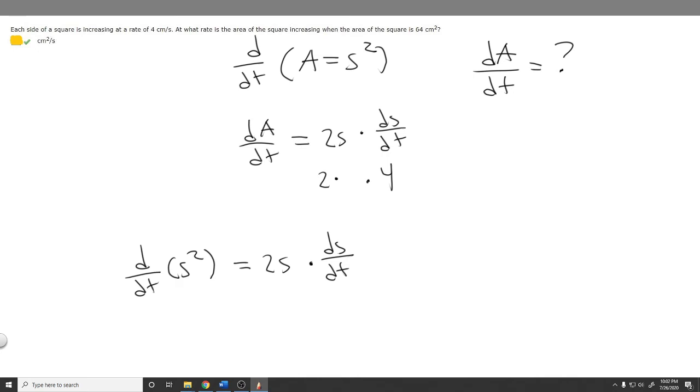So what is S? Well, they don't give it to us explicitly. They tell us that we're trying to find it at the moment when it's 64 centimeters squared. So if 64 is equal to S squared, because the area is equal to S squared, we can find the side length at this moment.